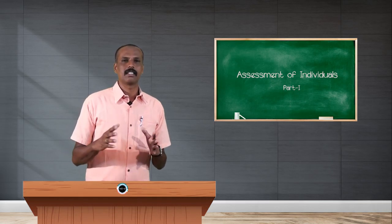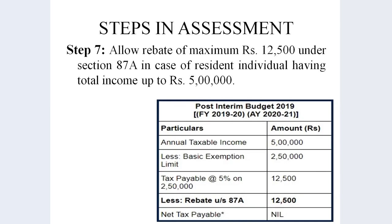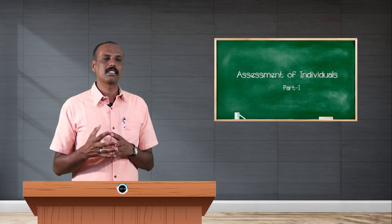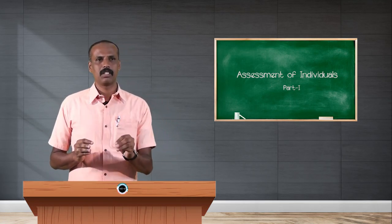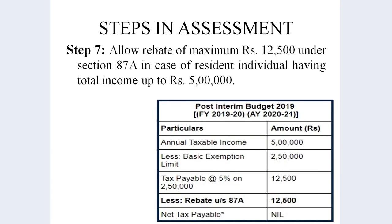Step 7 involves allowing a rebate under section 87A. This rebate depends on the assessment year — for assessment year 2020-21, the maximum rebate allowed under section 87A is ₹12,500, provided the individual's income is less than ₹5 lakh. Different slab rates apply based on the age and residential status of the assessee, which will be discussed further.